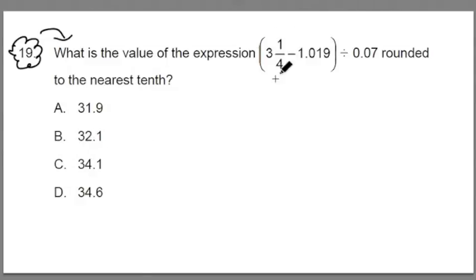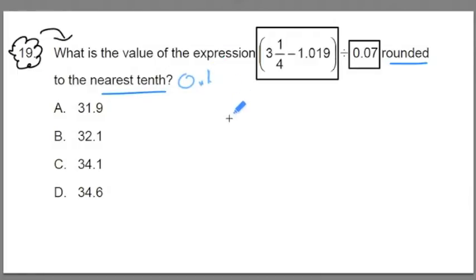We're going to be evaluating this expression using order of operations, just like the last problem. We do what's in the parentheses first, and there is an element of rounding going on. When we round, we're rounding to the nearest tenth. Now, if you look at the answer choices A, B, C, and D, they're all very close in value. In fact, A is 31.9 and B is 32.1, they're only off by two tenths.